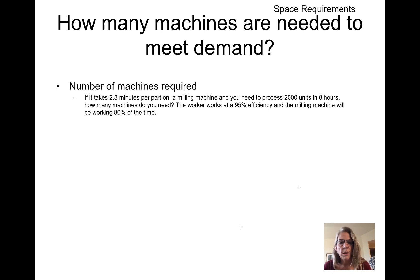We might want to understand how long it's going to take to process all of these. In this example, if it takes 2.8 minutes per part on a milling machine and you need to process 2,000 units in eight hours, how many machines do you need? The workers work at 95% efficiency and the milling machine will be working 80% of the time, which is also referred to as reliability.